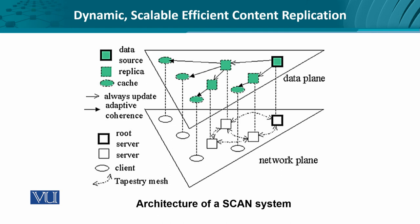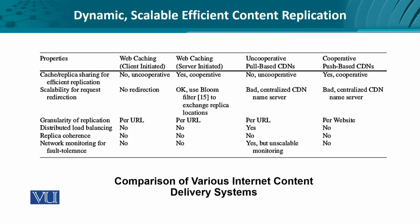At the network level, these are represented by root servers, servers, and clients, with relationships described through a dynamic location and discovery mechanism — a protocol implemented through what they call a tapestry mesh.